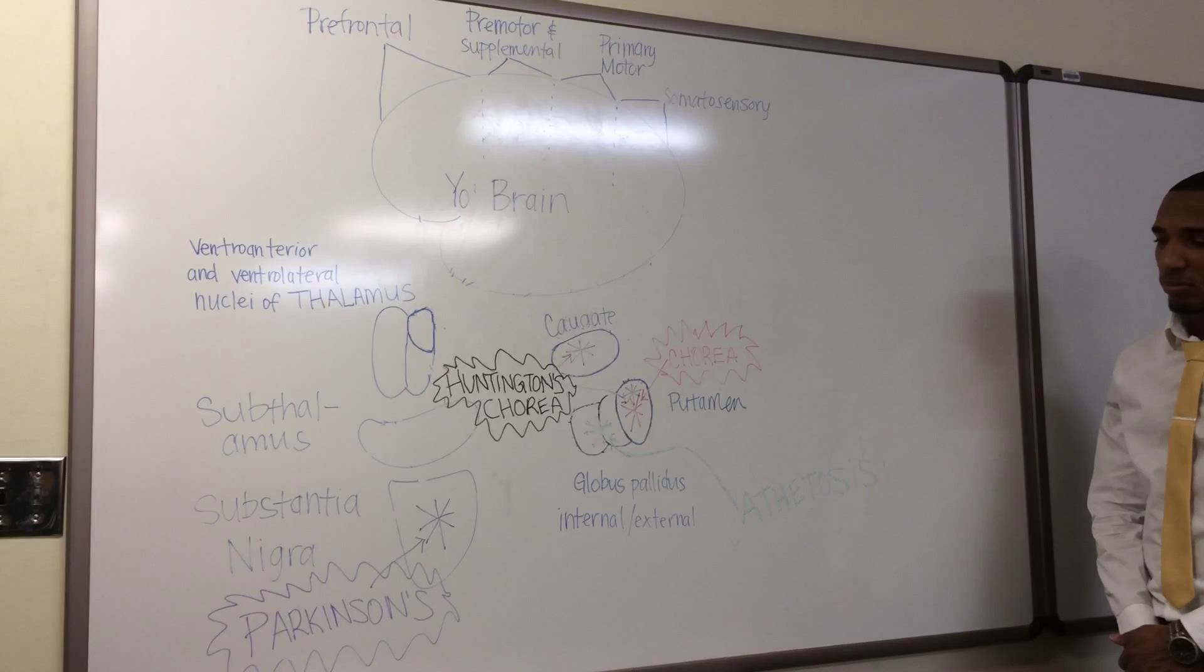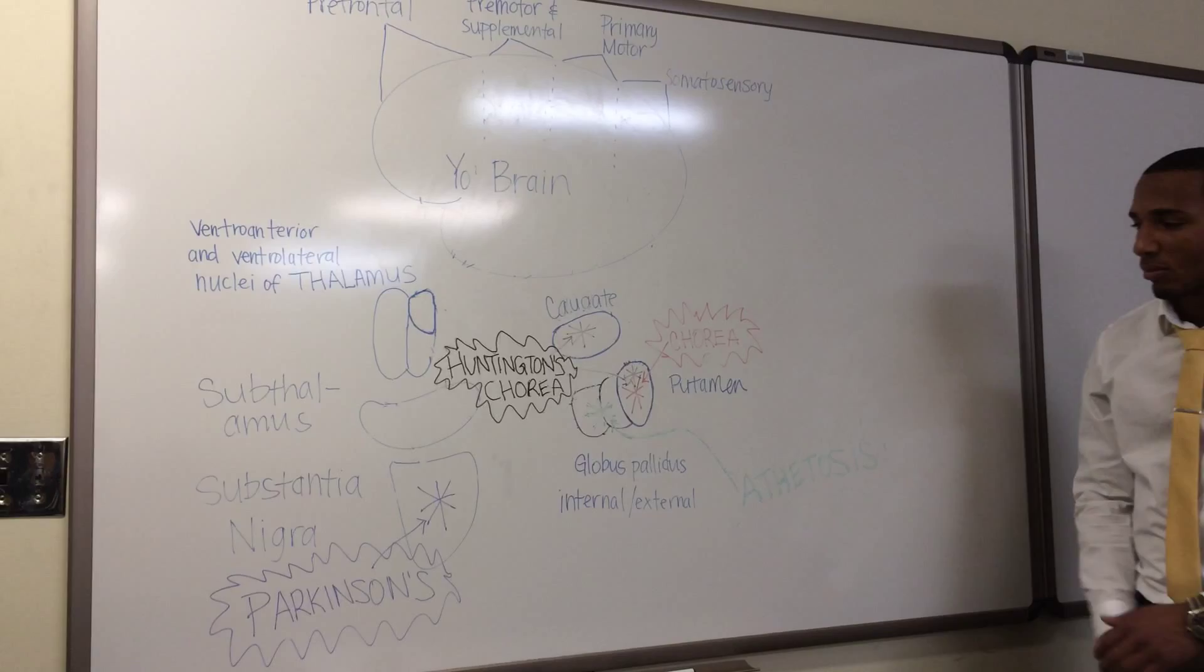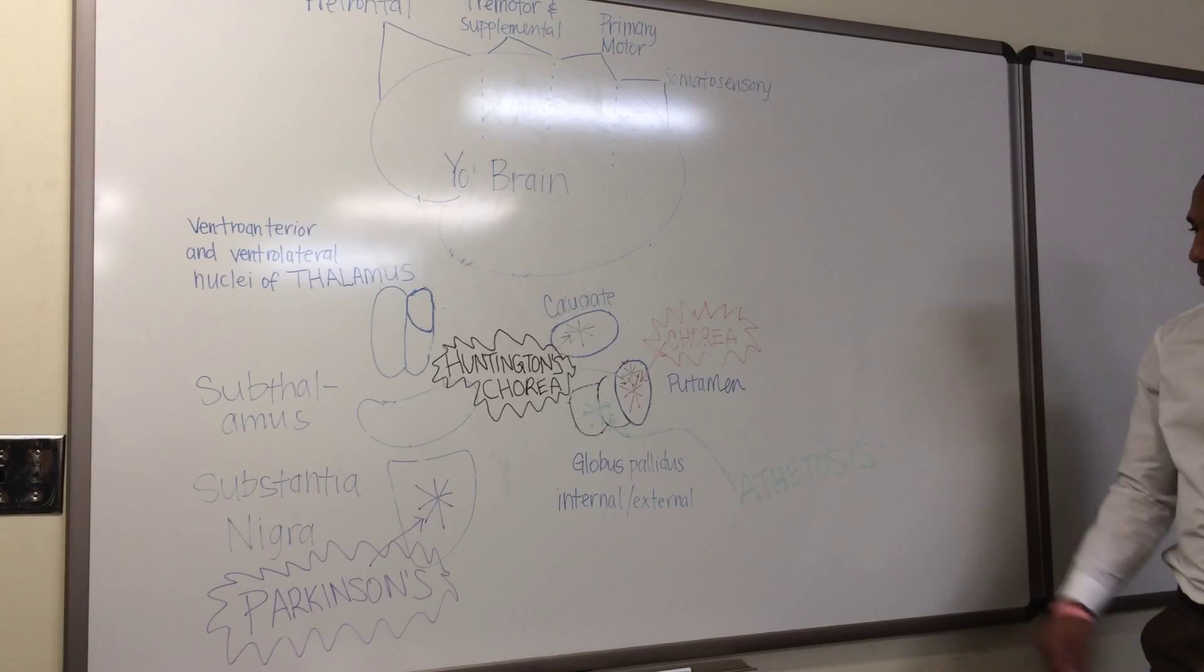The next lesion site is the globus pallidus. A clinical abnormality that occurs here is athetosis. This is characterized by spontaneous movements of the hand, arm, neck, and face.